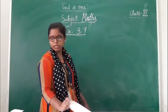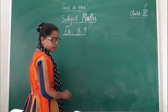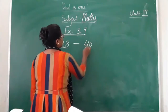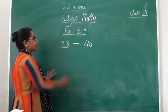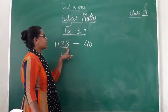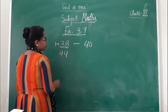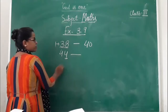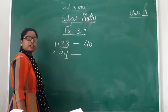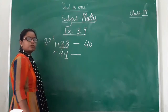Students, rounding off numbers. You have learned about rounding off numbers. This one is rounding off numbers. In the tens place, if our ones place is less than 5, then our tens place will not change. But if our ones place is greater than 5, then our tens place will increase.